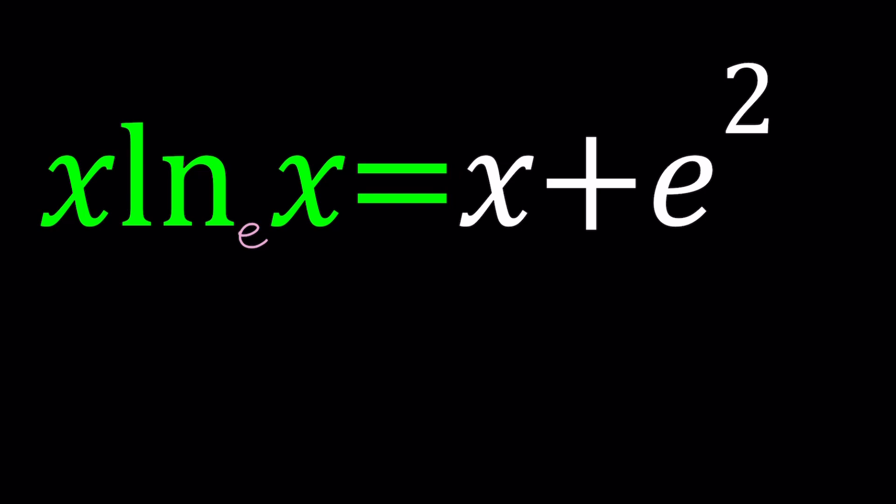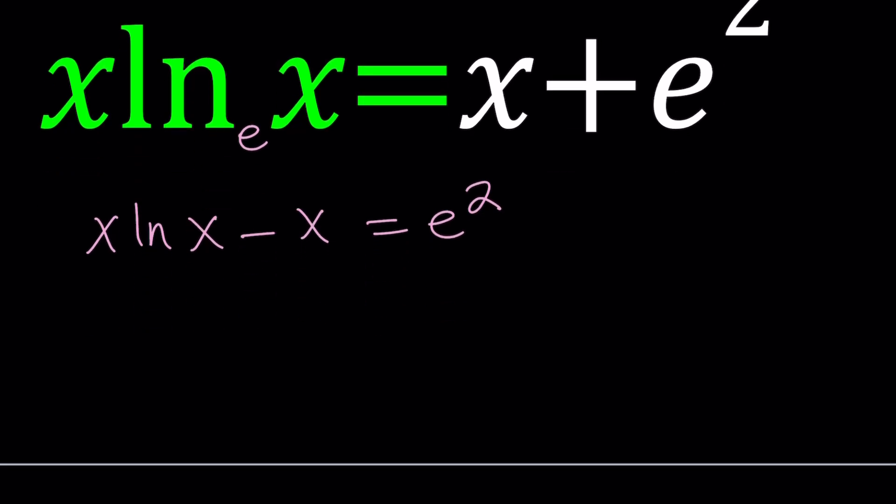Let's go ahead and first simplify this a little bit. Let's put the x's on the same side. That might be a good strategy because you want to solve for x, so you kind of want to isolate all the variables in most cases. Now we can factor out an x because x is a common factor. If you take out x, you get ln x minus 1 equals e squared.